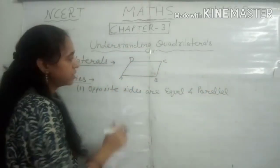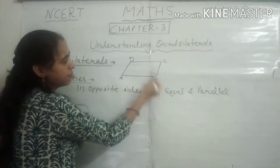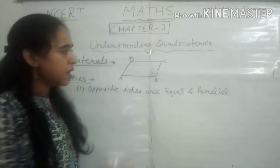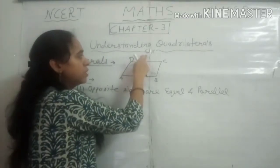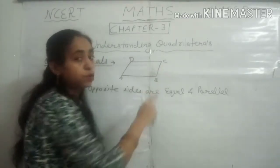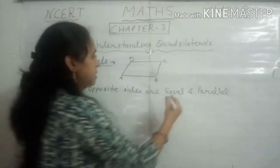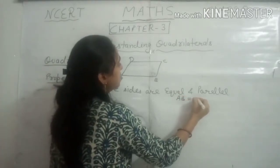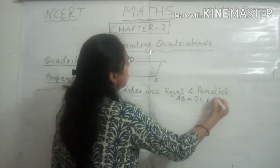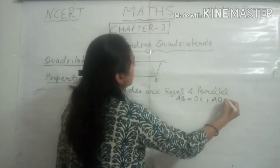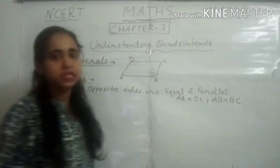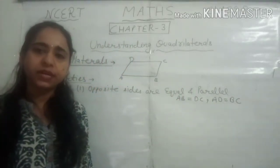Opposite sides are equal and parallel. For quadrilateral ABCD: AB is equal to DC, and AD is equal to BC. This is the number one property.